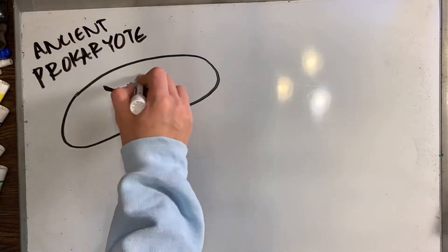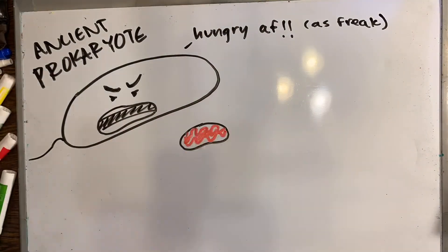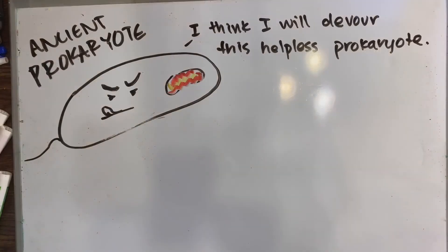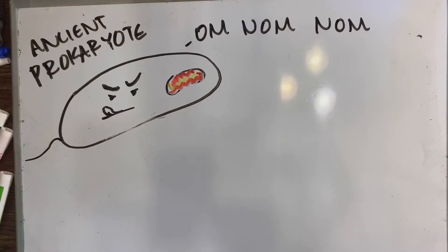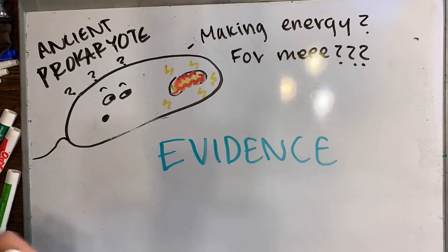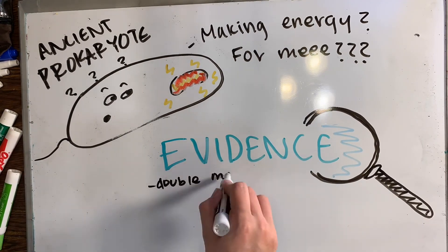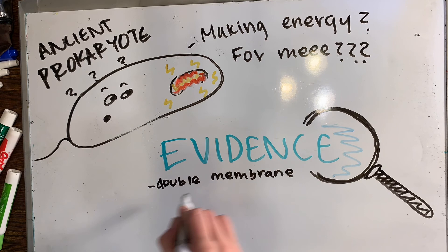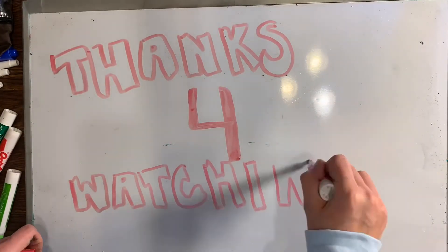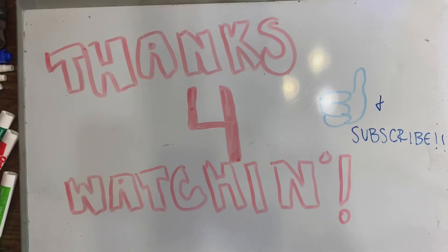The endosymbiotic theory is the current theory of how membrane-bound organelles came to be. This theory holds that ancient prokaryotic cells actually engulfed another cell, and these cells began to work together. Eventually, the engulfed cell became what we know as the mitochondria or the chloroplast — or really any other membrane-bound organelle. Evidence includes the fact that mitochondria and chloroplasts have a double membrane, have their own DNA, and are able to reproduce on their own. That is all for unit two, chapters four through five. Thank you for watching!